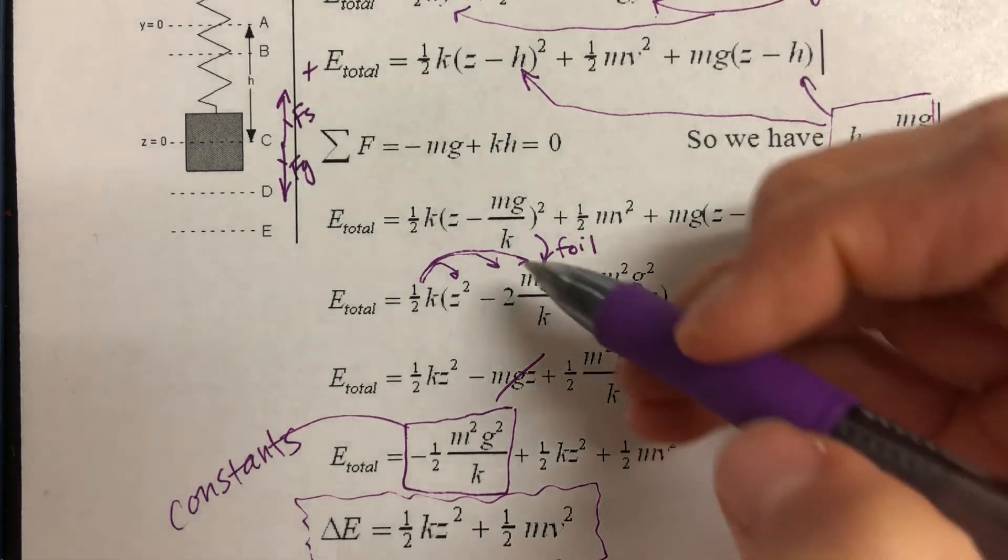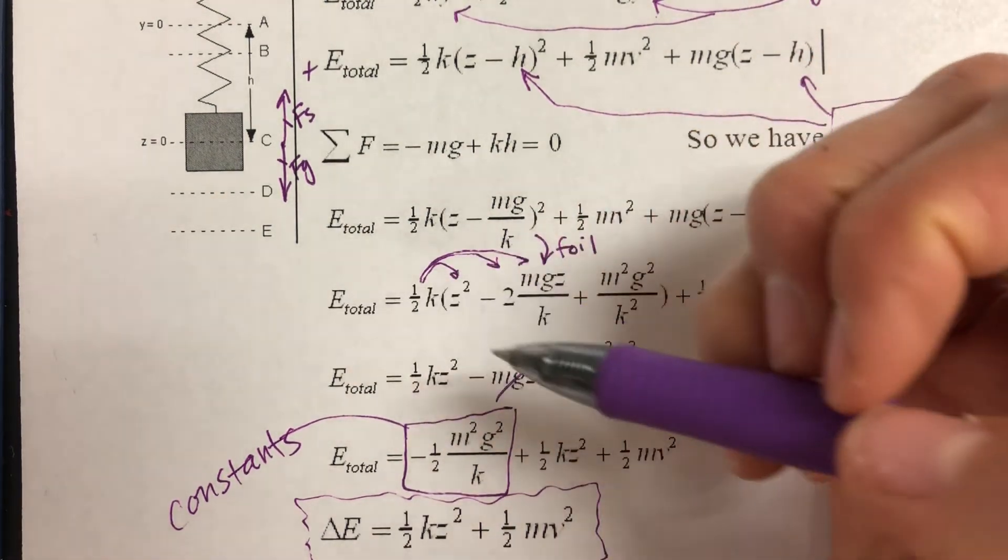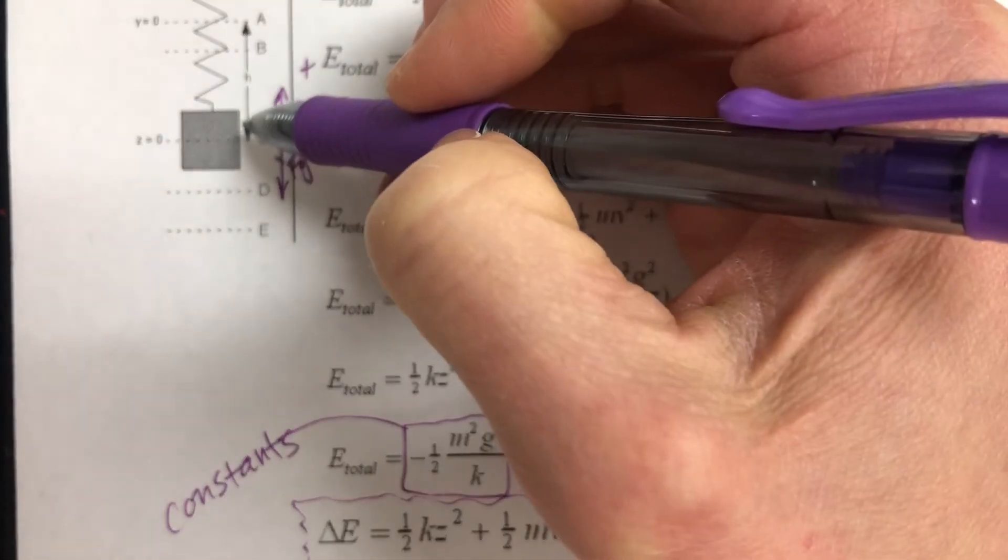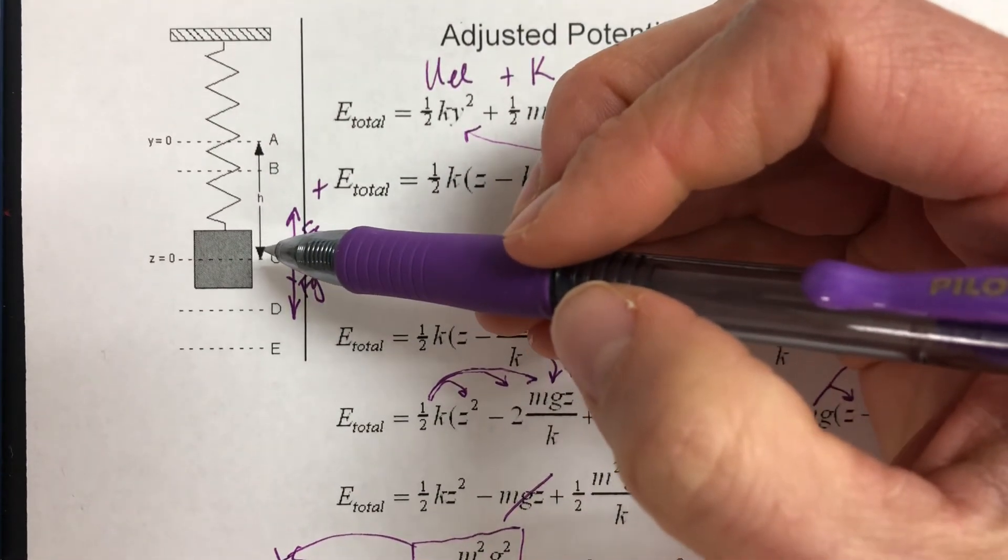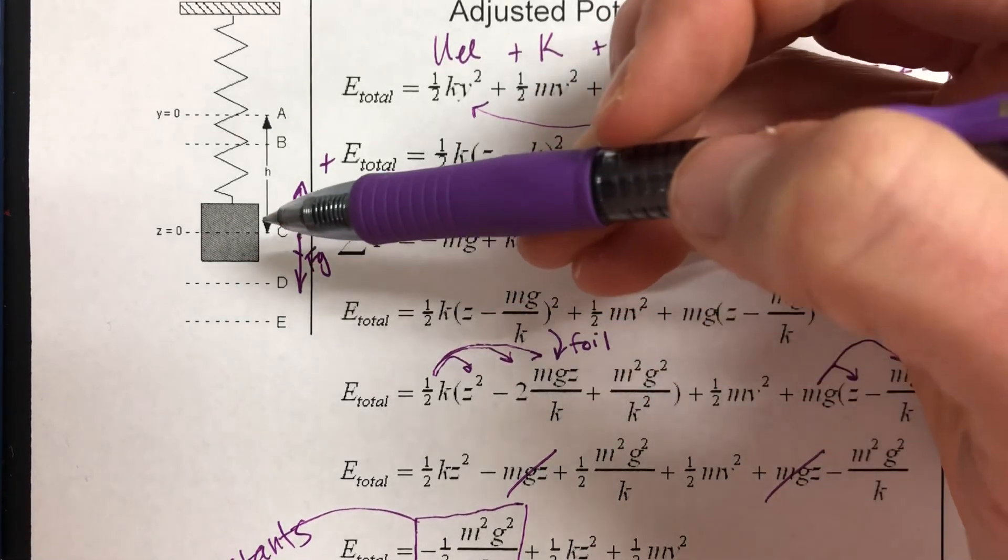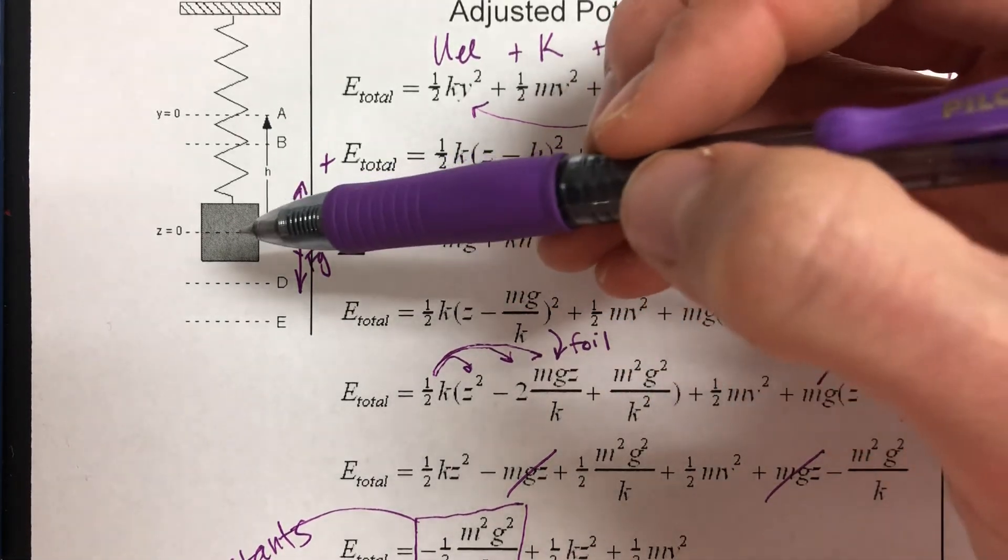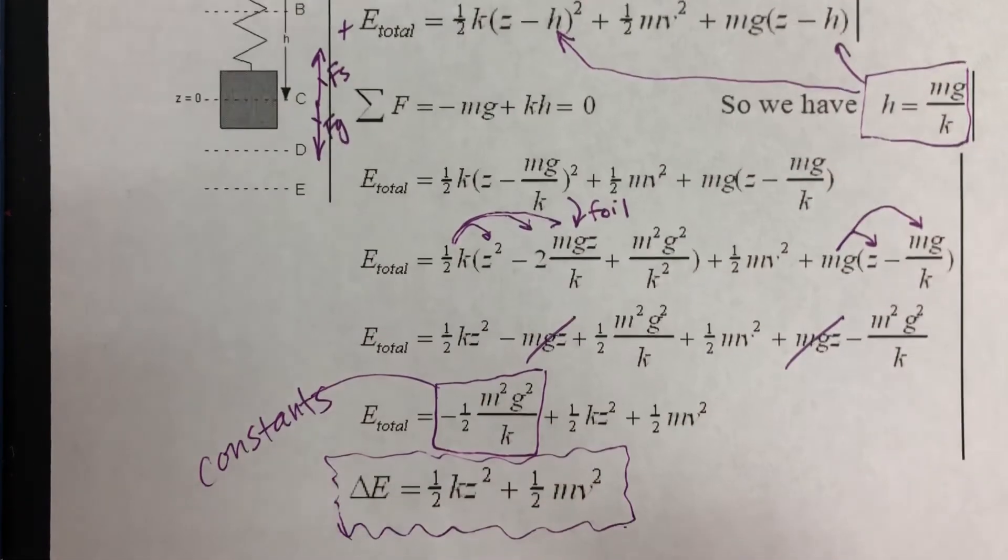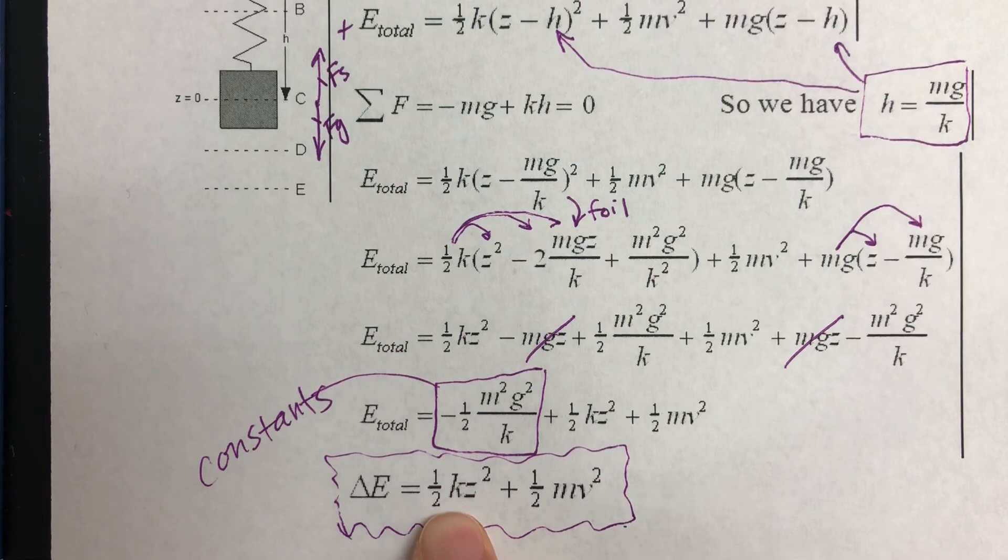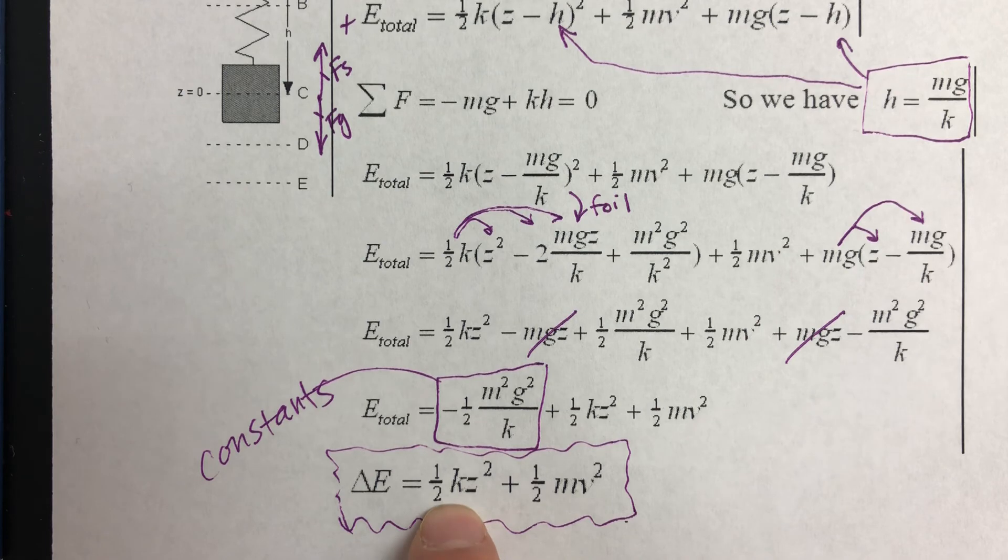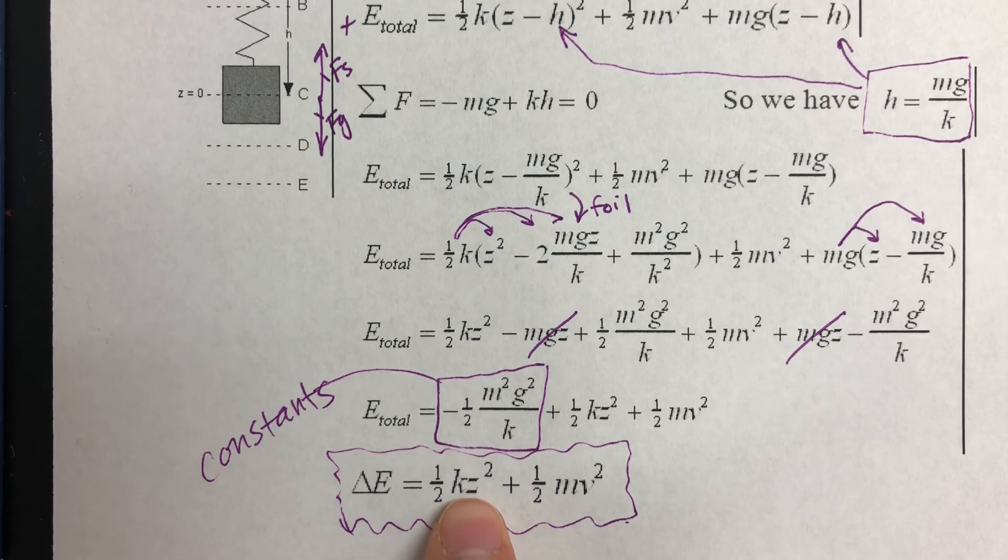And just a reminder that z is the position of the mass from the system's equilibrium position. So that in your data that you just collected, that is your position data point, since you set this as your zero. So you can make a column for potential energy by doing 1/2 k, and you do need to measure the k of your spring, times z, which is your position value squared.